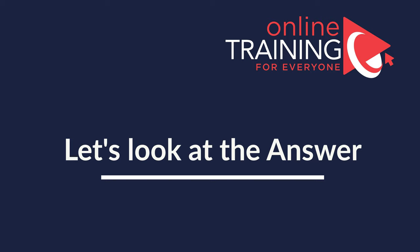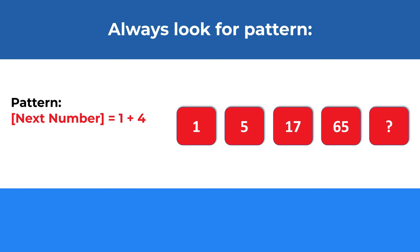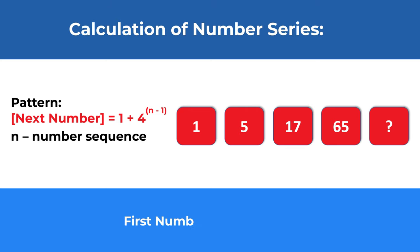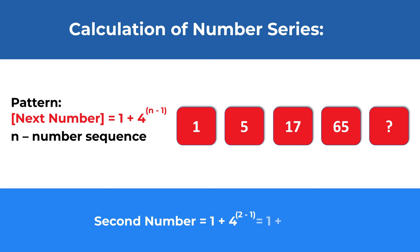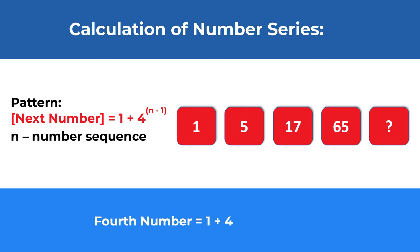To solve these types of problems, always look for patterns. The pattern here is that the next number is calculated as 1 plus 4 to the power of (n minus 1). The first number is 1 plus 4 to the power of 0, which is 1. The second number is 1 plus 4 to the power of 1, which is 5. The third number is 1 plus 4 squared, which is 1 plus 16, equals 17.